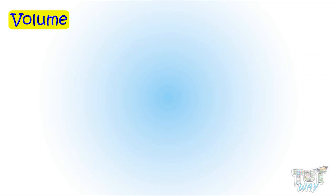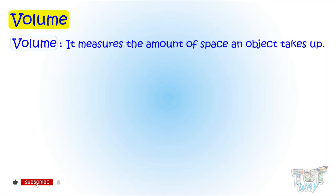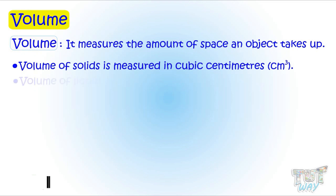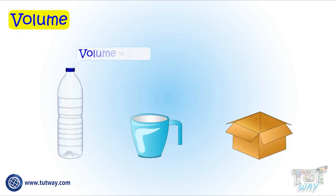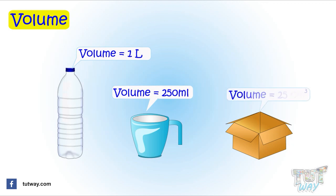Now let's learn about volume. Volume measures the amount of space an object takes up. It is measured in cubic centimeters for solids and liters for liquids. For example, the volume of this bottle is 1 liter, the volume of this mug is 250 milliliters, and the volume of this box is 25 cubic centimeters.